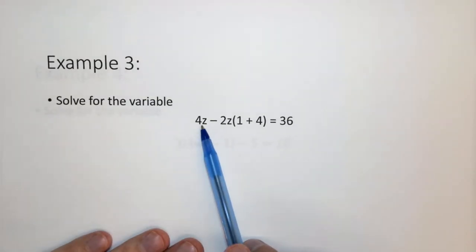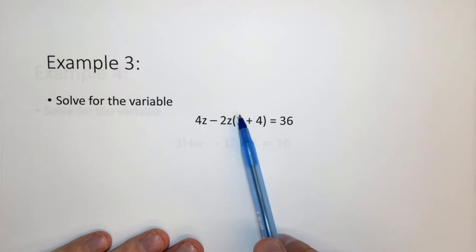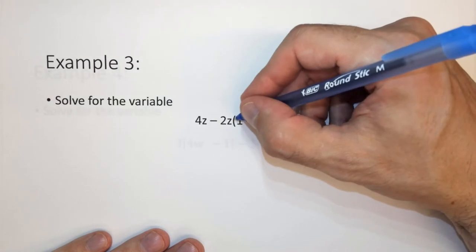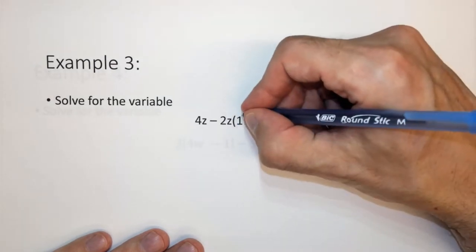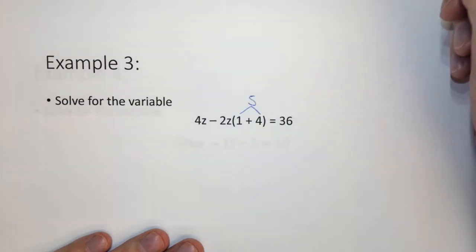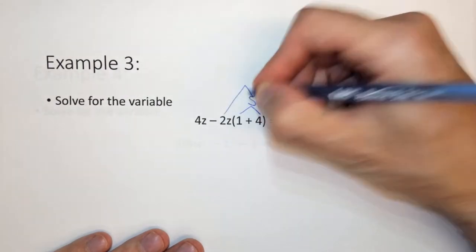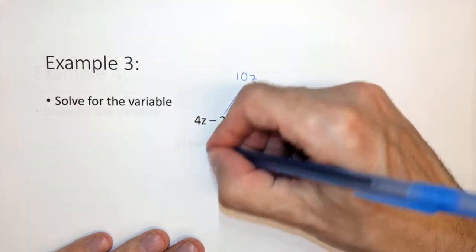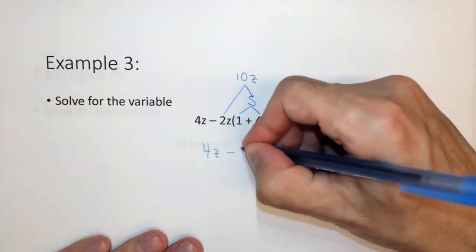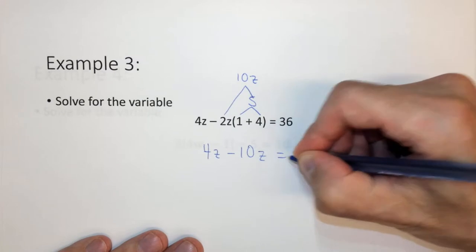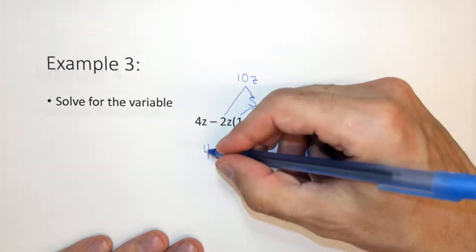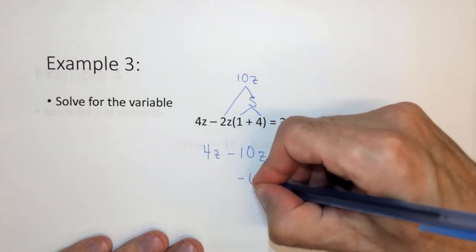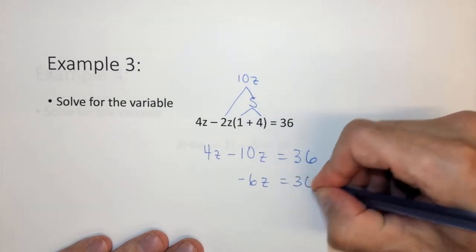Here we have 4z minus 2z times 1 plus 4 equals 36. We can't forget our order of operations. We want to do this first. So 1 plus 4 is 5. 2z times 5 is 10z. So what we essentially have is 4z minus 10z equals 36.